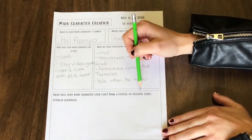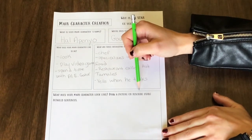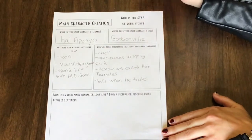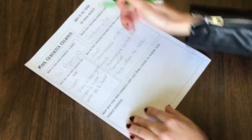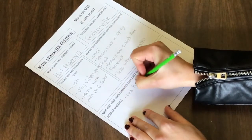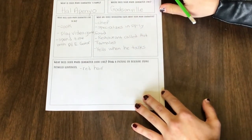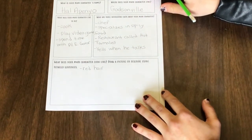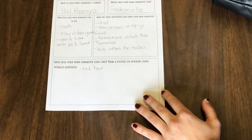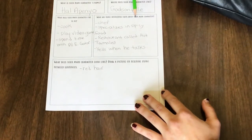The last part is going to be what does your main character look like. You can draw a picture or you can describe the character using detailed sentences. One thing that I know for sure that I want about jalapeno's looks is that he's going to have red hair. But the main details that you really want to focus on are what does your main character like to do and three interesting facts about your main character.